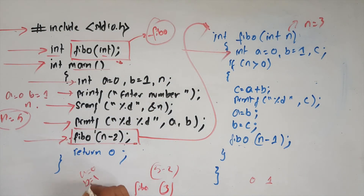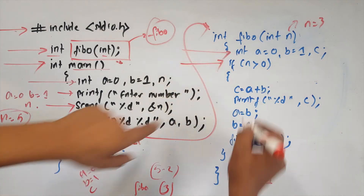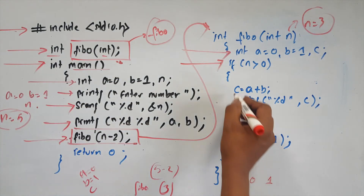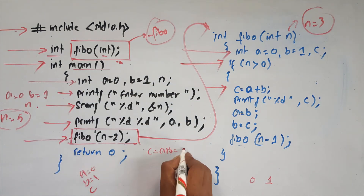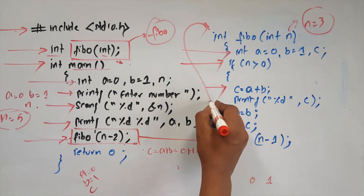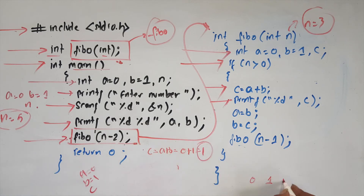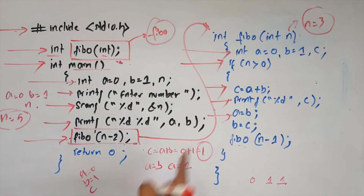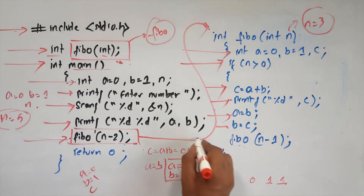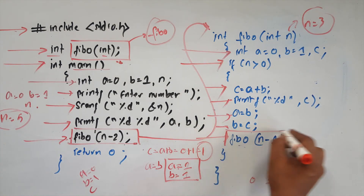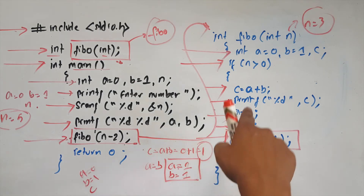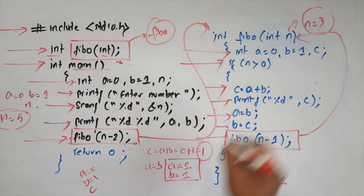A equals to 0, b equals to 1, then the n value is 3. If n is greater than 0, then we continue. If c is equal to a plus b, then the term updates. The number is 1. If c equals b then the term is 1. C value is 1, b value is 1, a value is 1.